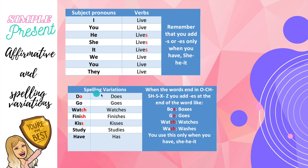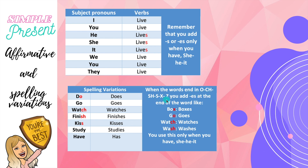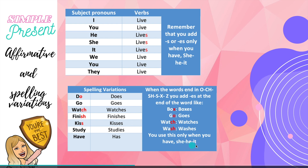Let's talk about spelling variations. Some words in red show different endings: do → does, go → goes, watch → watches, finish → finishes, kiss → kisses, study → studies, have → has. When words end in O, CH, SH, S, X, or Z, you add ES at the end. For example: box ends in X → boxes; go ends in O → goes; watch ends in CH → watches. Remember, you use this only when you have she, he, or it.